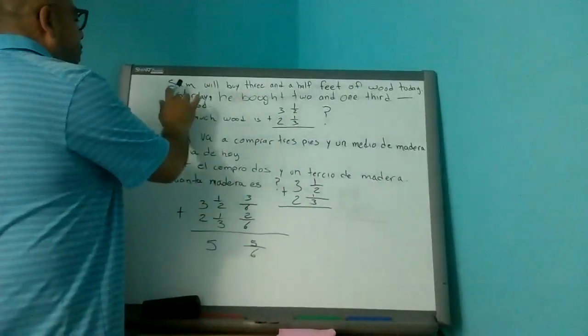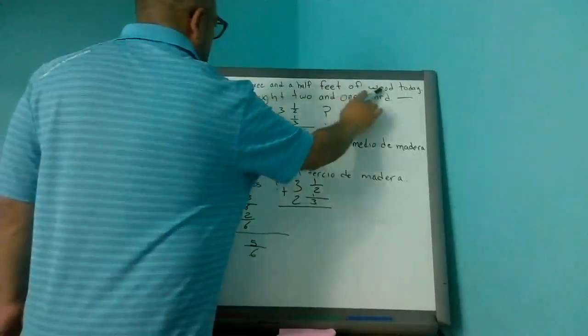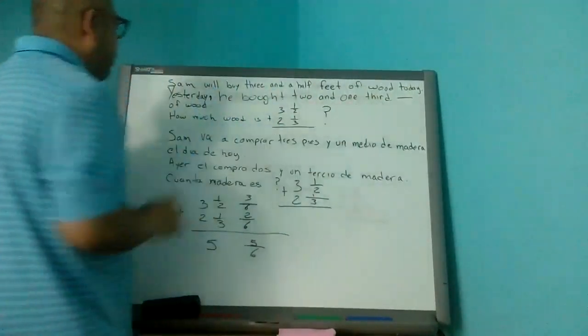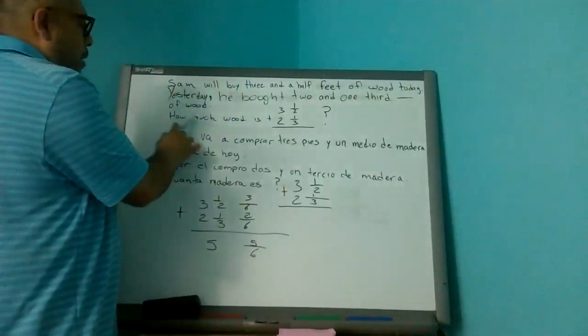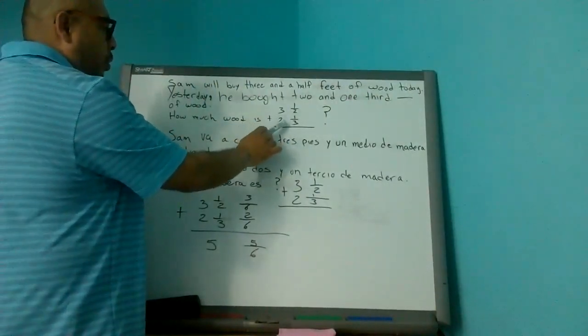So now we have the problem saying Sam will buy three and a half feet of wood today. Yesterday he bought two and one third. How much wood is two and one half plus two and one third?